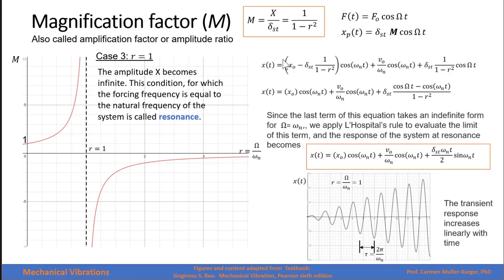Analyzing the resonance response, we see that two terms have exactly the same amplitude. Grouping them, we get cosine of omega t and cosine of omega_n t, but since omega and omega_n are the same, we have the indeterminate form 0/0. Applying L'Hôpital's rule — differentiating the numerator and denominator — we obtain an expression multiplied by t. This means as time increases, the amplitude grows without bound: the response increases to infinity with time.